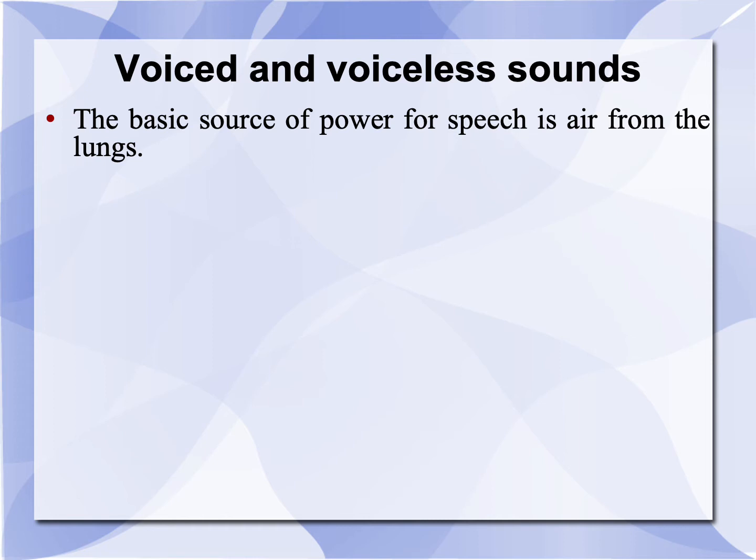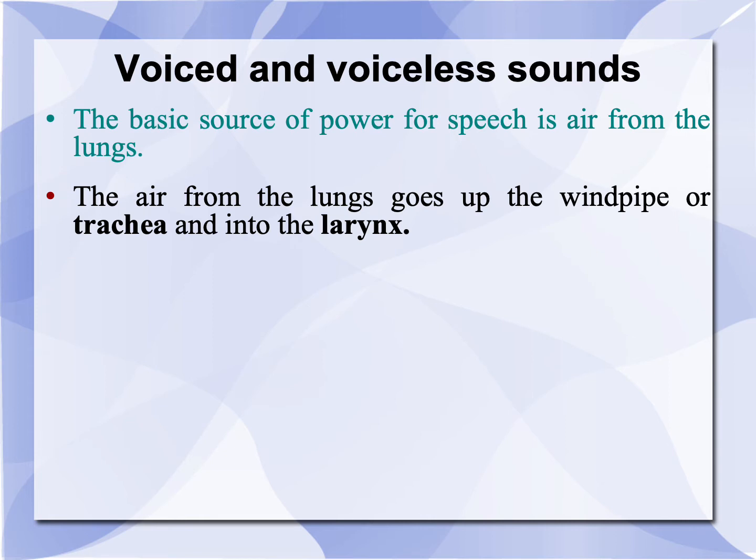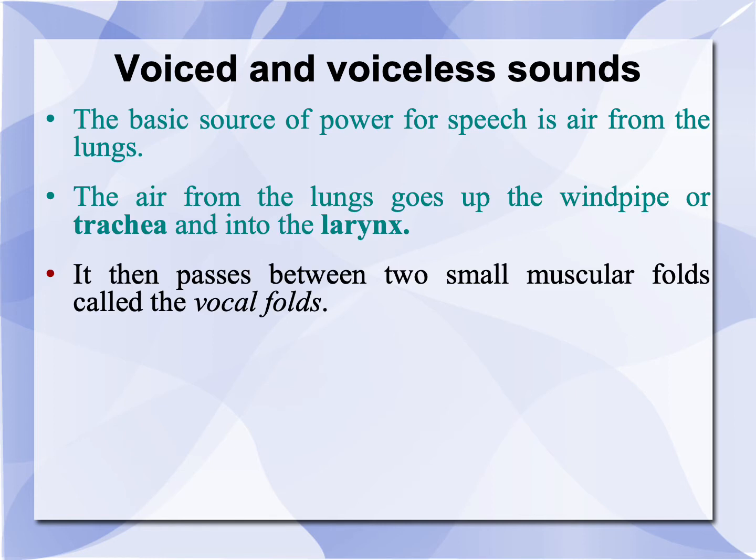The basic source of power for speech is air from the lungs. The air from the lungs goes up the windpipe or trachea and into the larynx. It then passes between two small muscular folds called the vocal folds. Some people call them the vocal cords.